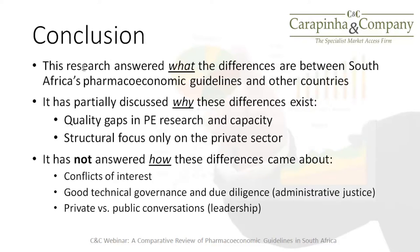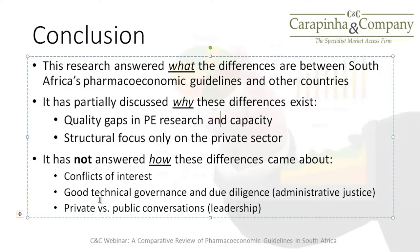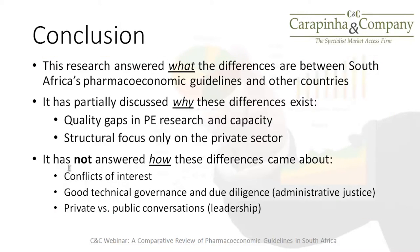The research has answered what the differences are between South Africa's pharmacoeconomic guidelines and other countries and has partially discussed why these differences exist. Quality gaps in pharmacoeconomic research and the narrow structural focus only on the private sector, to the exclusion of patients in the public sector, may partially explain these differences. However, what the research has not answered is how these differences came about — something CNC will be pursuing in the future.